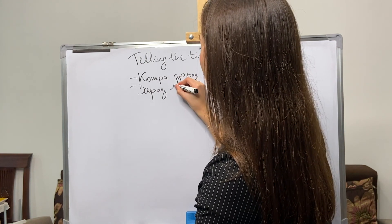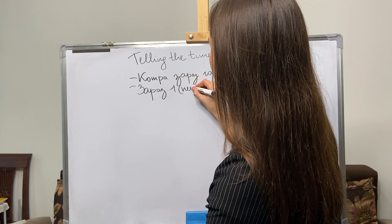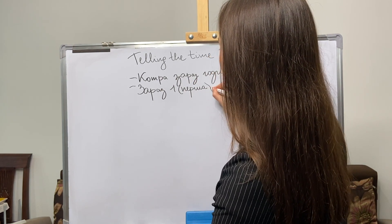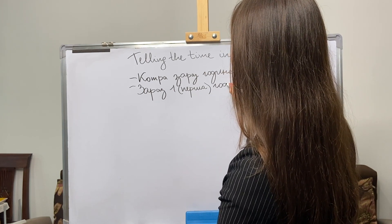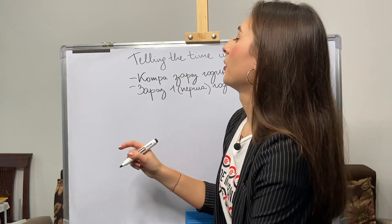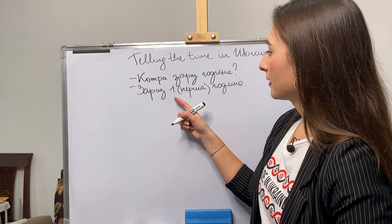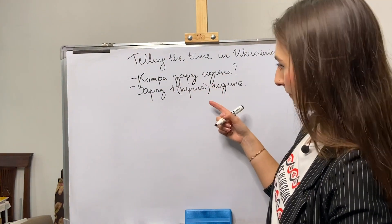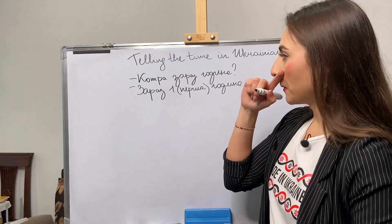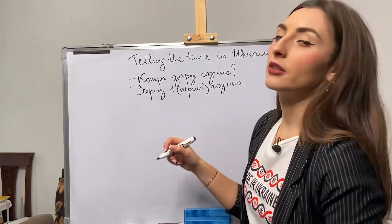And you say: «перша година». So «зараз перша година» means right now it's 1 p.m. — or 1 a.m., doesn't matter. «Зараз» means right now, and in English you use the «it is» construction, but as you know we don't use «it is» in Ukrainian language.